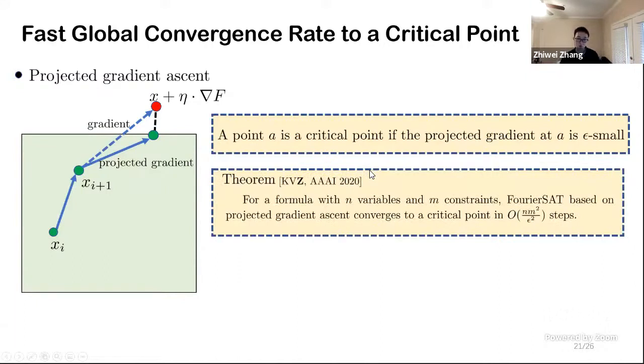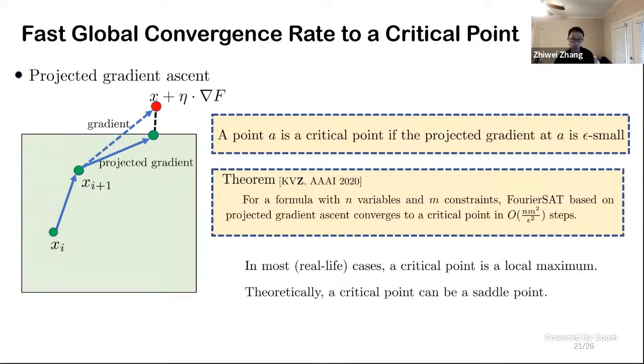A point is called a critical point if the projected gradient at that point is epsilon small. One of our theorem is that if our framework uses projected gradient ascent, then it will always converge to a critical point in polynomial steps.